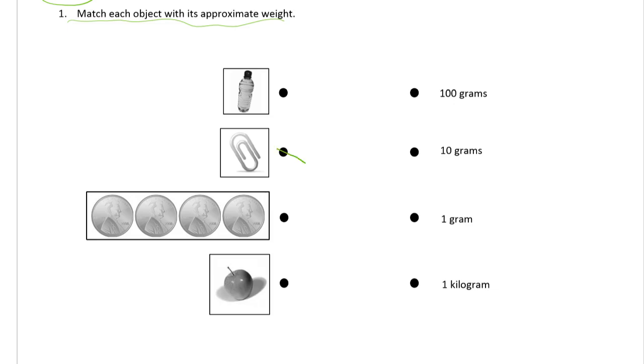A paperclip weighs about a gram. That's one that you might have tried, maybe on a digital scale or some other kind of scale. Paperclips are about a gram.